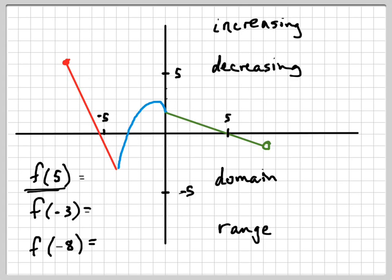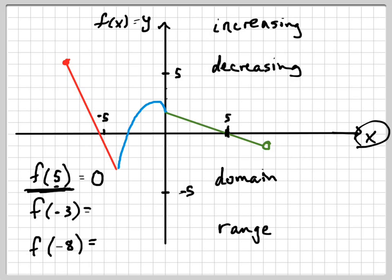First let's do f of 5. f of 5 means what is the y value when x equals 5? Take your graph — this is your x, and this up here is your y or your f of x. So what is f of 5? That means what is y when x is 5. I go to my x-axis, my horizontal axis, I go to 5, which is right here — it's labeled. The y value is on the line, so I'm going zero up and down. The function value is zero. f of 5 is zero. That's function notation.